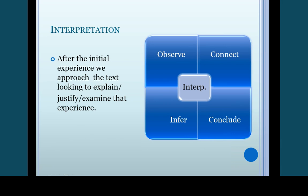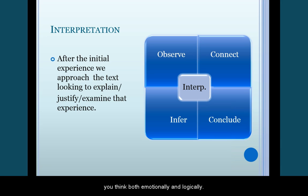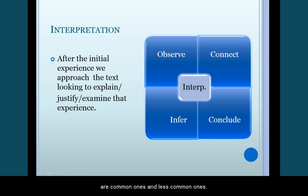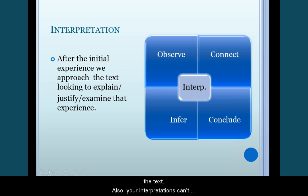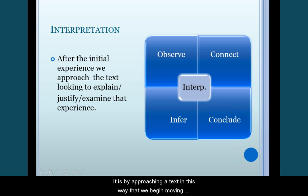Interpretation occurs when all these elements overlap, when you think both emotionally and logically. Remember, there is no one right interpretation. There are common ones and less common ones — for my money, the less common ones are typically more interesting. But remember, your interpretation still needs to have supporting evidence in the text. Also, your interpretations can't blatantly ignore parts of the text. It is by approaching a text in this way that we begin moving into analysis, which is a good thing.